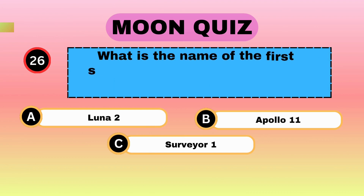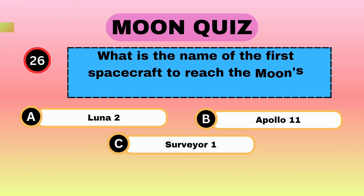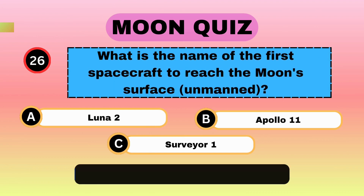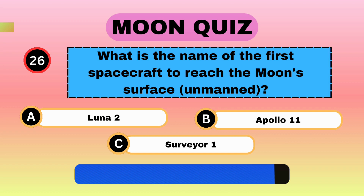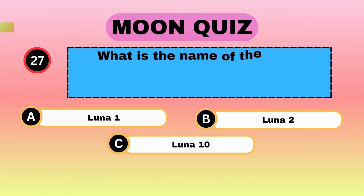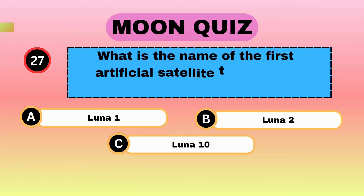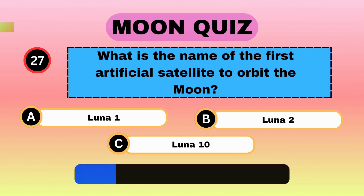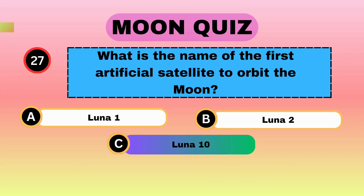What is the name of the first spacecraft to reach the Moon's surface unmanned? Luna 2. What is the name of the first artificial satellite to orbit the Moon? Luna 10.